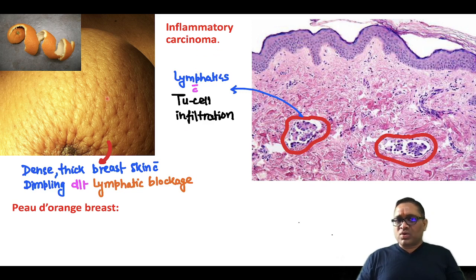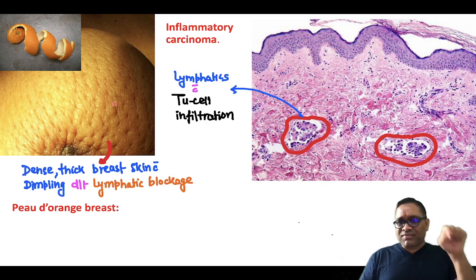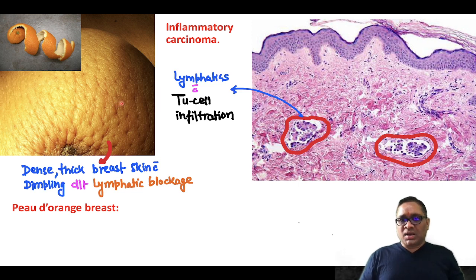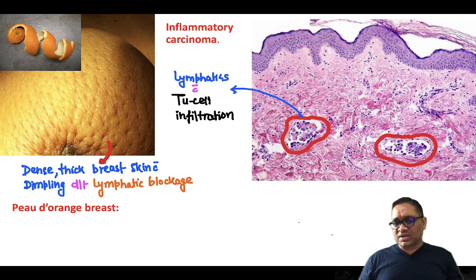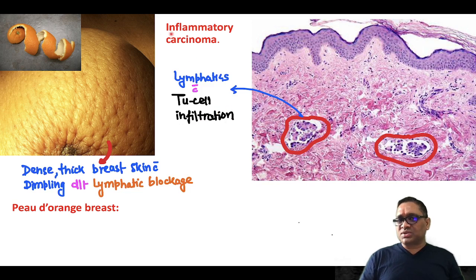When you are going to take the biopsy from here, because there is a lymphatic obstruction, what we are expecting in the biopsy — the lymphatics will be having tumor cells. We can see these are the two lymphatic channels which are containing tumor cells, which looks like an inflammation. So, lymphatics with tumor cell infiltration — this is inflammatory carcinoma of the breast.